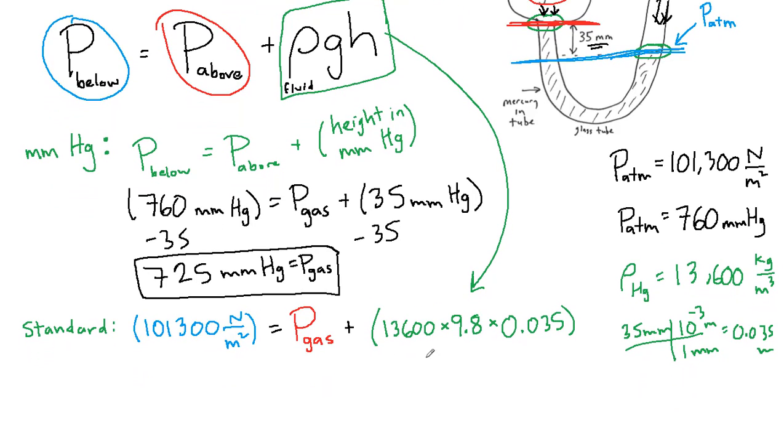All right, so when we multiply these together, we get 4,665. So we'll subtract that from both sides. And so on the left, we get 96,635. And on the right, we just have the pressure of the gas. And so we have our final answer.